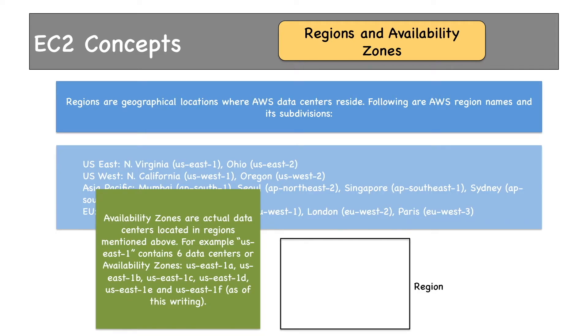So we have a region, and inside of that region, we have an Availability Zone or AZ. We will be launching all the EC2 instances or virtual machine resources inside of these AZs. Thanks for watching — feel free to ask me any questions in the Udemy Q&A or the email ID mentioned.